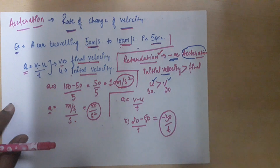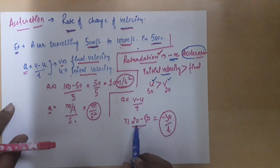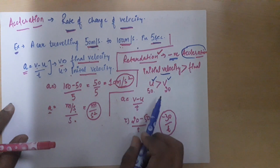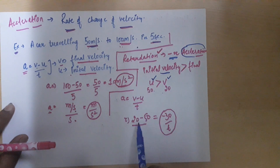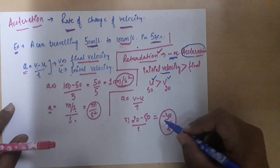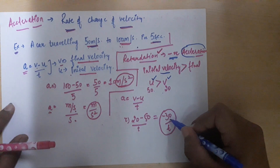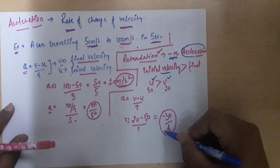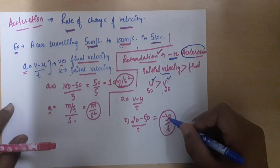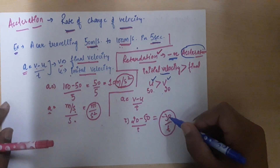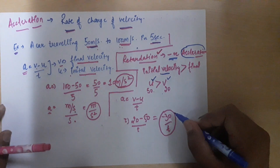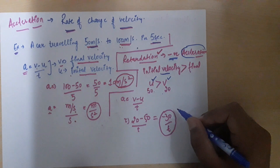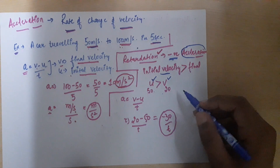For example, suppose u is 50 and v is 20. Applying the formula: v minus u by t gives 20 minus 50, which is minus 30 upon t — so the acceleration is negative.